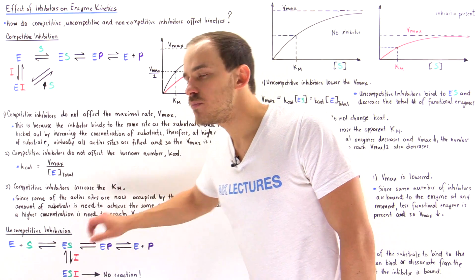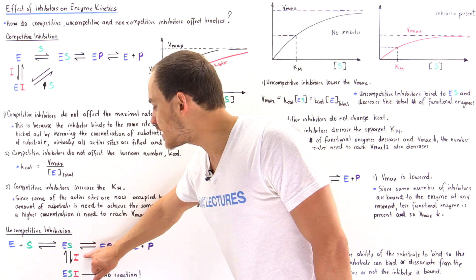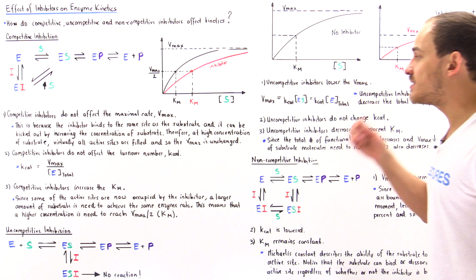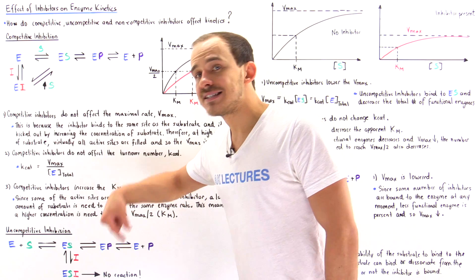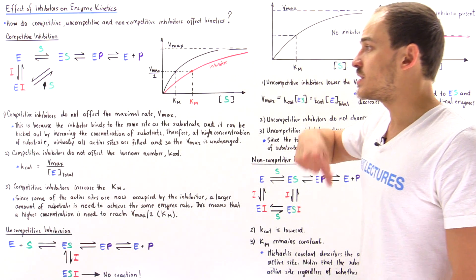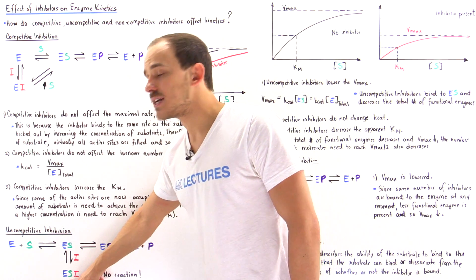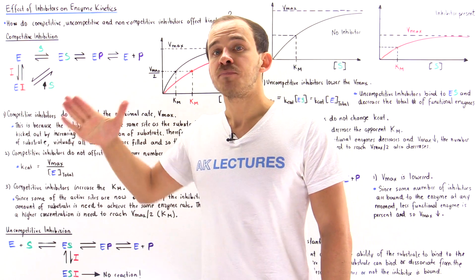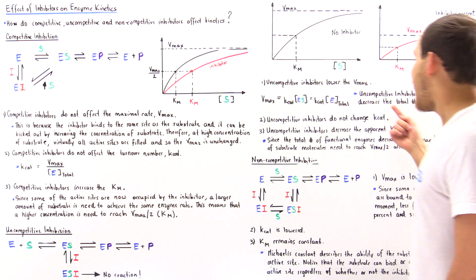In uncompetitive inhibition, the Vmax actually decreases because at any given time some of those enzyme-substrate complexes are going to have an inhibitor present, which decreases the number of fully functional enzymes and lowers Vmax. The K-Cat is not changed because the active site's ability to convert the substrate to the product does not change. And the K-M decreases because once the inhibitor binds onto that complex, it prevents that substrate from leaving the active site, which increases the substrate's affinity for the active site and decreases the K-M.